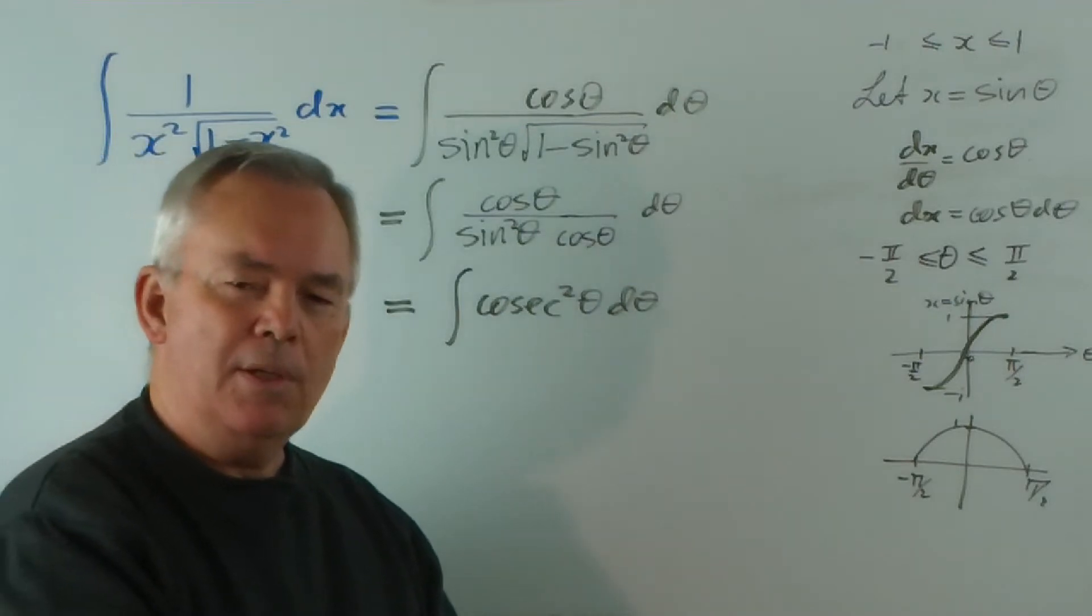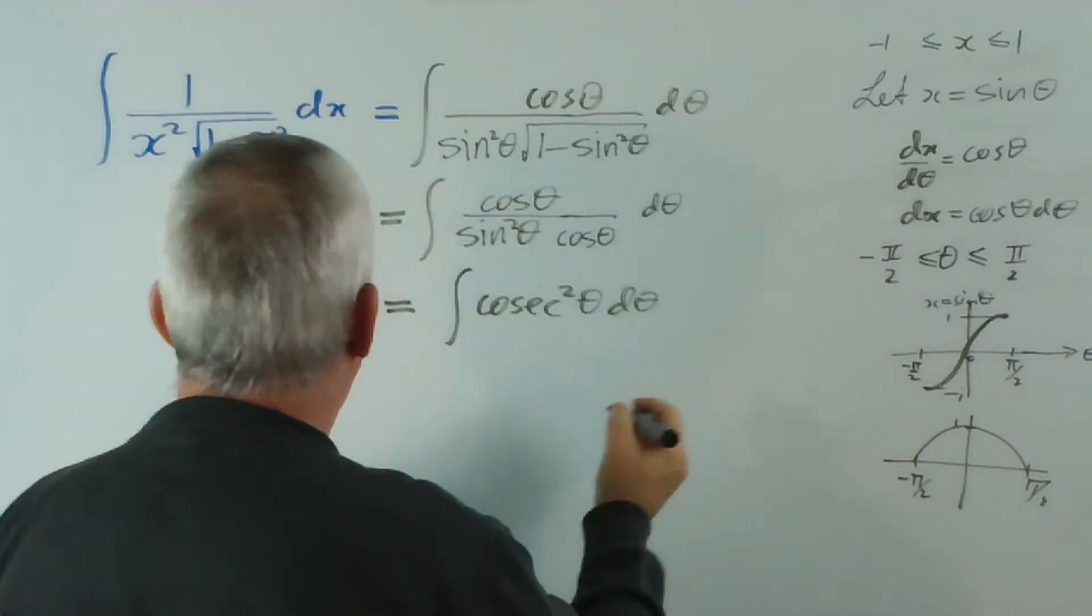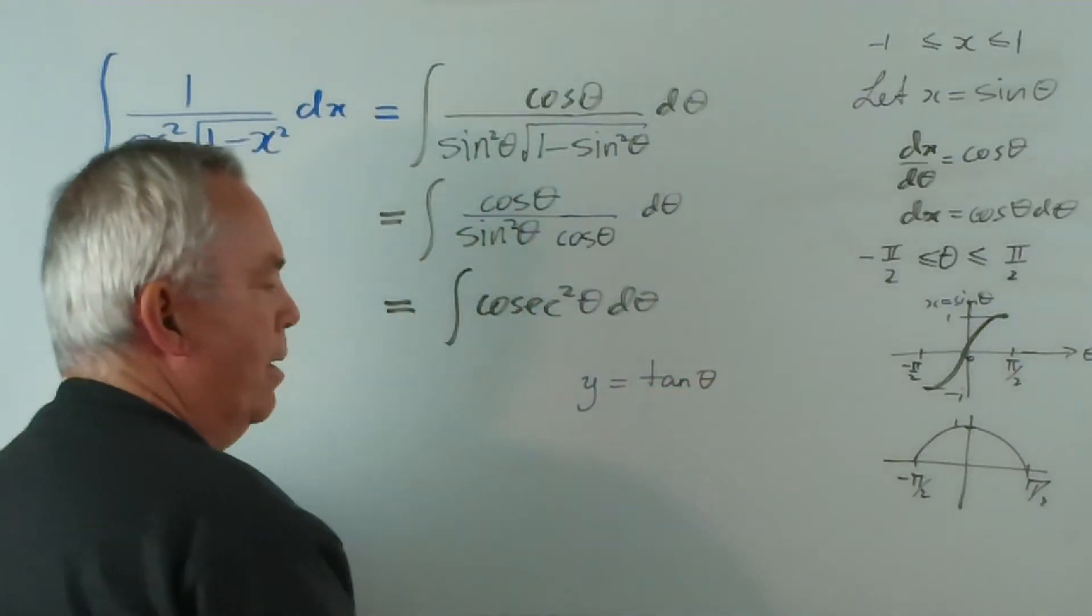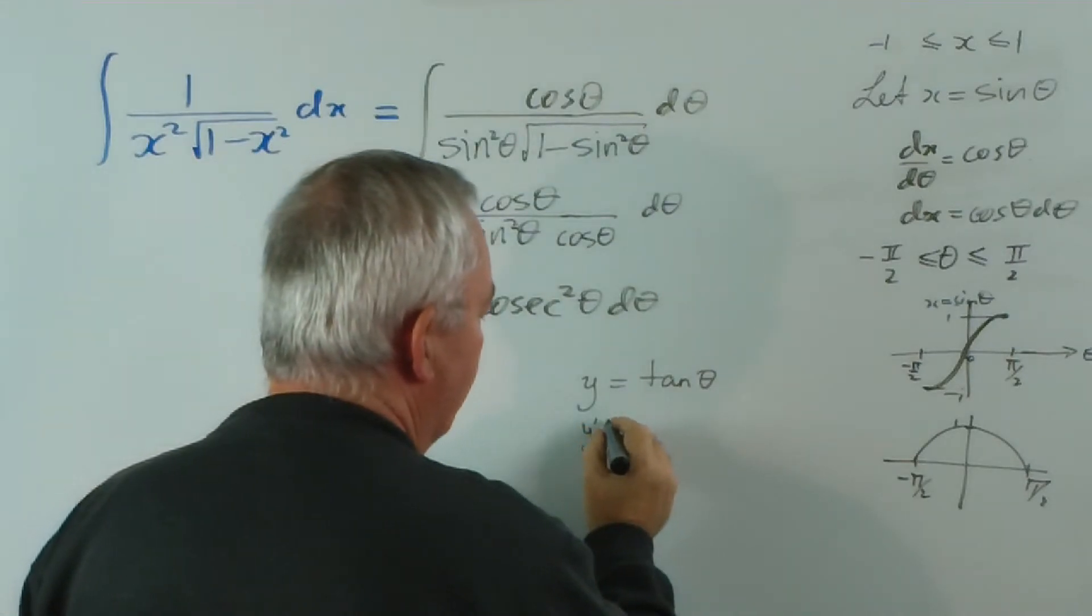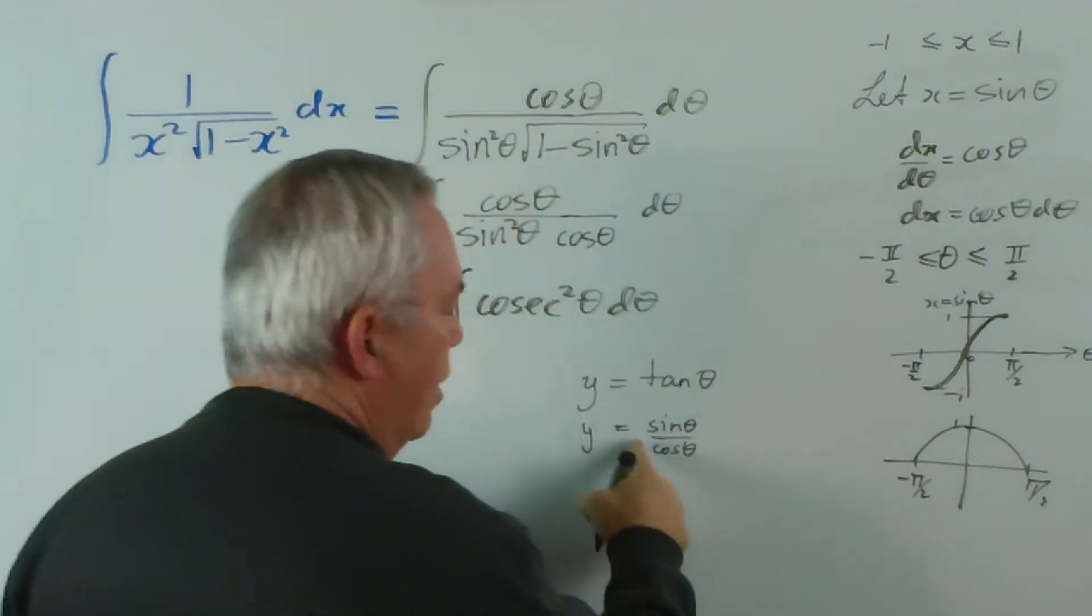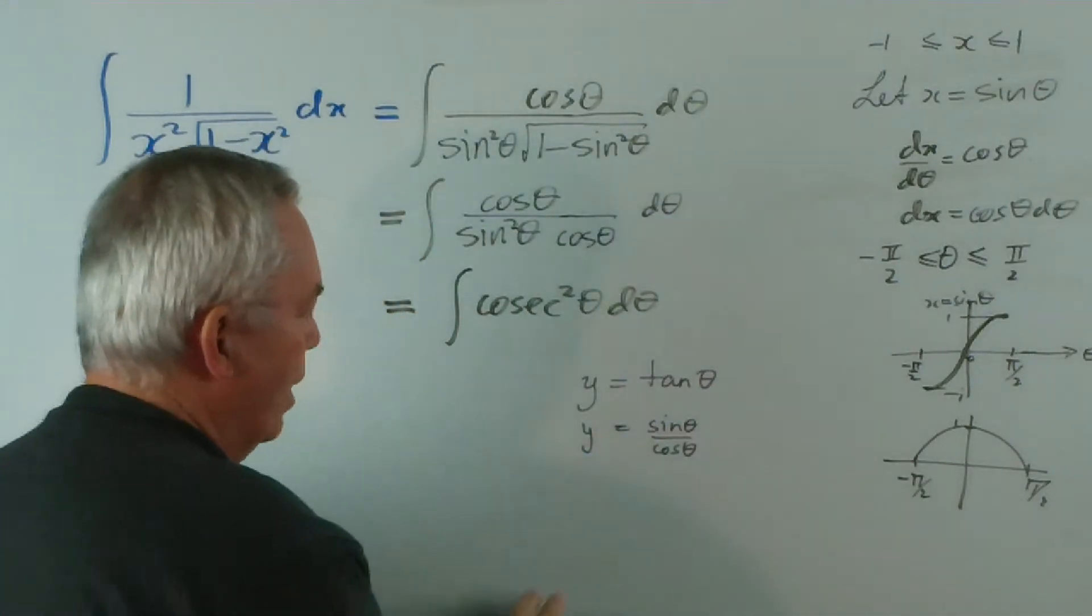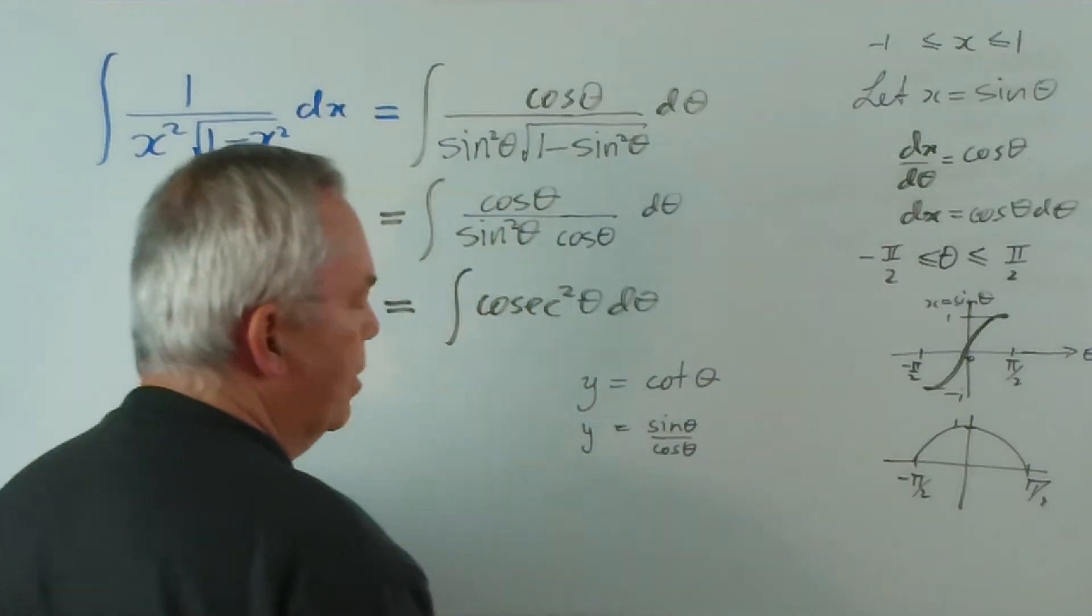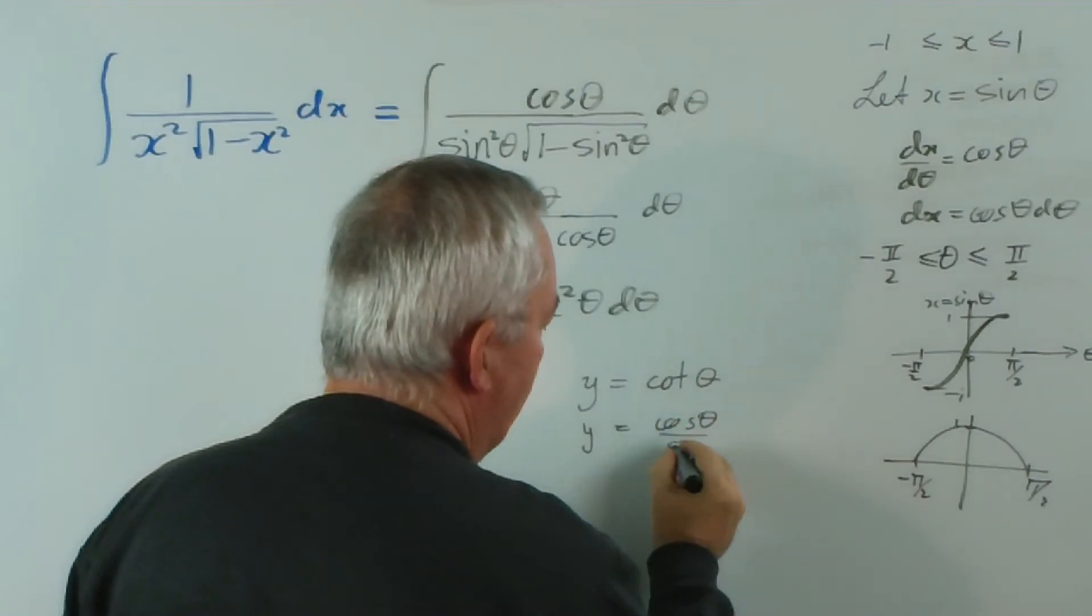You know that the integral of secant squared is tan θ simply because when, at some point, I'm going to rub this out, when you differentiated tan θ, one of the ways you would have done it would be to write sin θ/cos θ, differentiate using the quotient rule and, lo and behold, the secant squared pops out. So what would happen if we did this? What's the derivative of cot θ? Well, it's going to be the derivative of cos θ/sin θ.